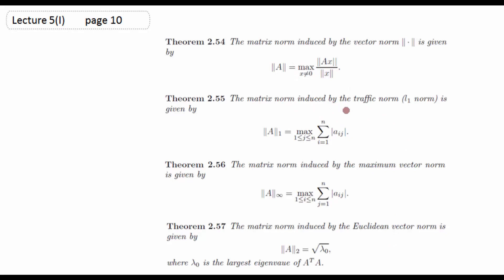Matrix traffic norm (L1): ||A||₁ = max_{1≤j≤n} Σᵢ₌₁ⁿ |aᵢⱼ| — یعنی column-wise maximum sum۔ Maximum norm (L∞): ||A||∞ = max_{1≤i≤n} Σⱼ₌₁ⁿ |aᵢⱼ| — یعنی row-wise maximum sum۔ دونوں میں فرق: traffic norm میں j fix اور i change کرتے ہیں (column-wise)، اور maximum norm میں i fix اور j change کرتے ہیں (row-wise)۔